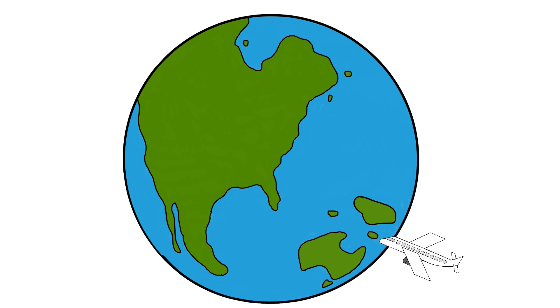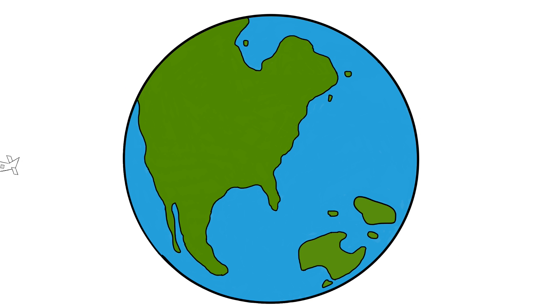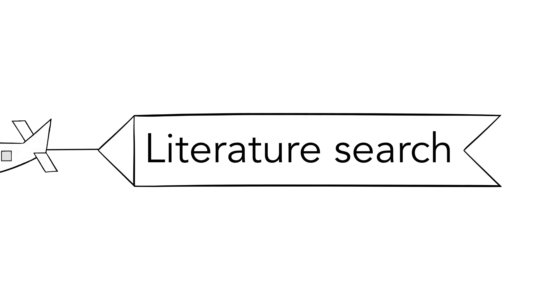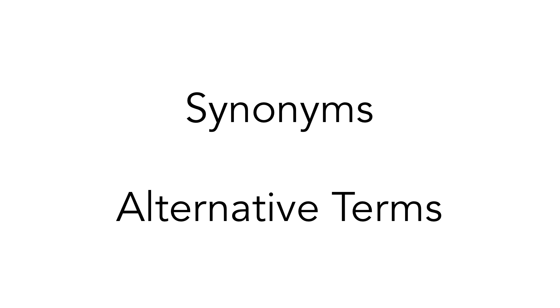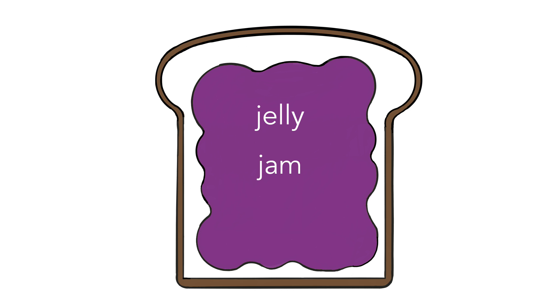Now, if you've traveled overseas you probably know there are lots of other words to describe the same thing, even a peanut butter and jelly sandwich. The same concept applies when doing a literature search — it's a good idea to learn what the synonyms and alternative terms are for the thing you want. For example, jelly is also called jam or conserve in some countries.